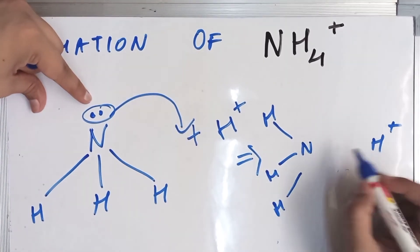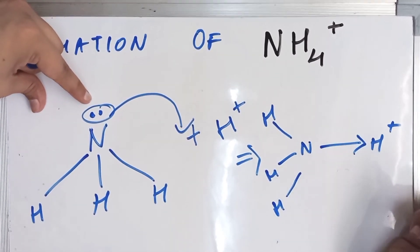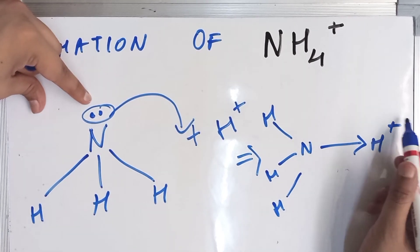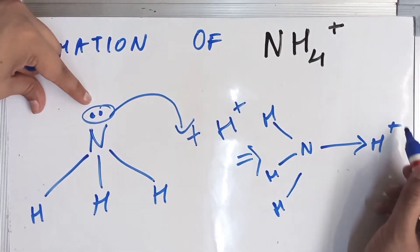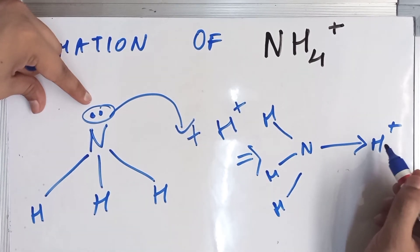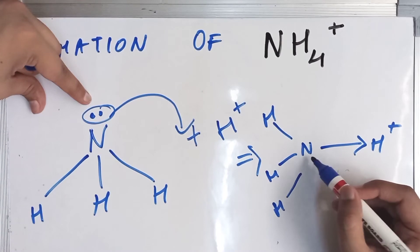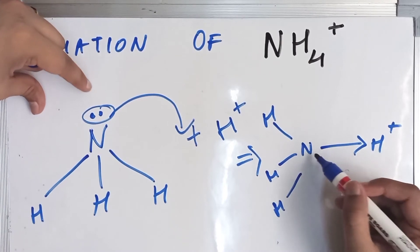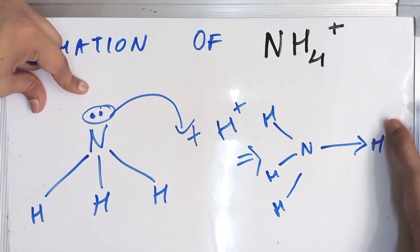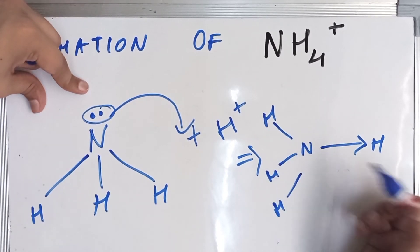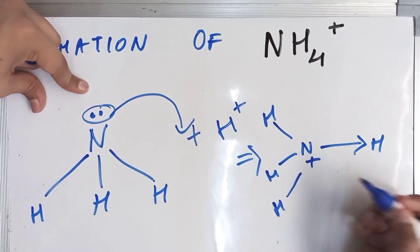I'm going to replace these two electrons with a coordinate bond. Now it is not going to be H+ anymore because it has satisfied itself with the electrons which came as a present from nitrogen. So it will be just H, but since it was nitrogen who donated electrons, nitrogen is going to gain positive charge.